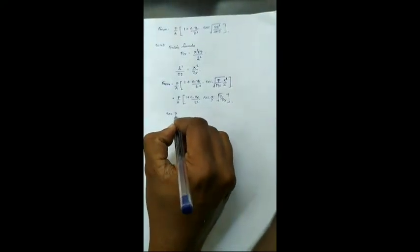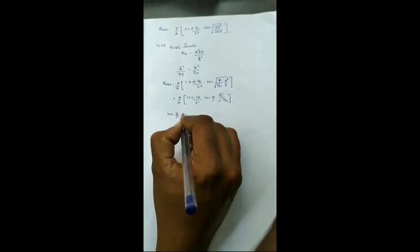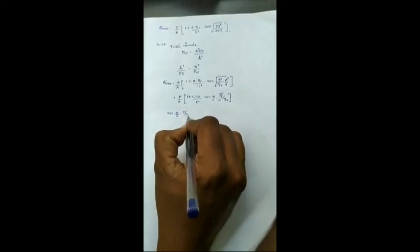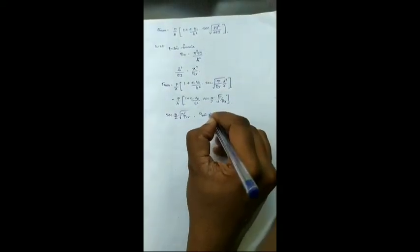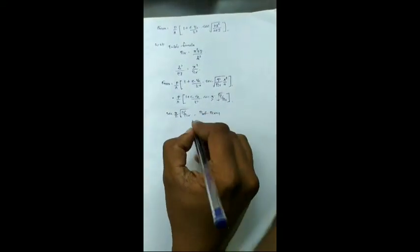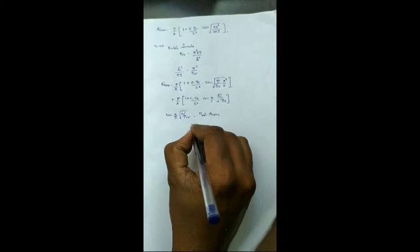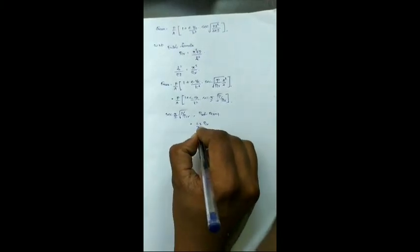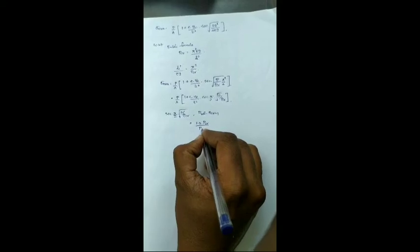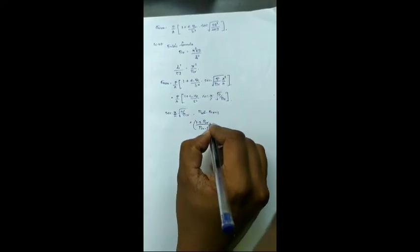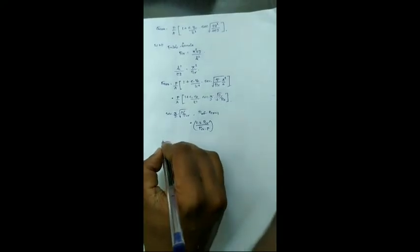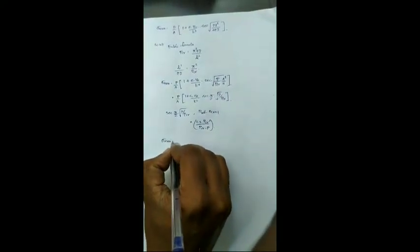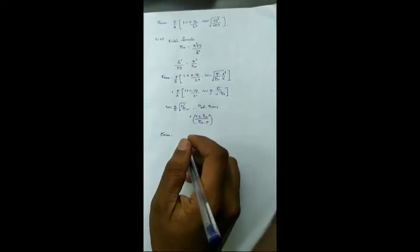Right, to evaluate this value of secant pi by 2 root P by P CR, Professor Perry has found an empirical value as 1.2 into P critical by P critical minus P. These empirical values are based on values taken from the experiment. These are not real values which will not have any concepts.